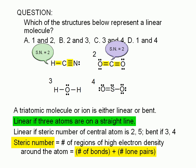For structure 3, the steric number is 4. There are four groups of electrons sticking out of the oxygen: 1, 2, 3, and 4. The steric number of the oxygen atom in water is therefore 4. Finally, for the sulfur atom in structure 4, the steric number is 3: 1, 2, and 3.